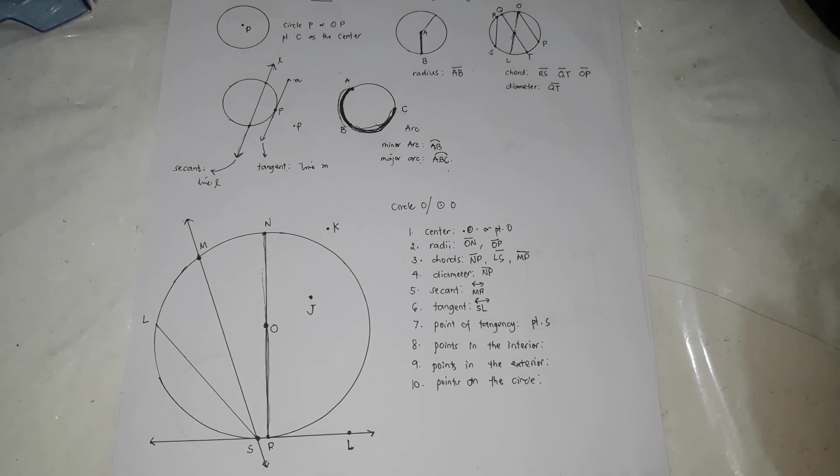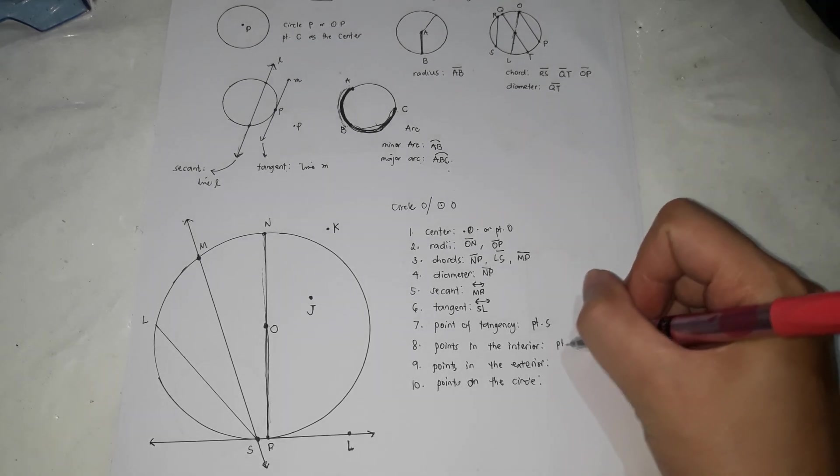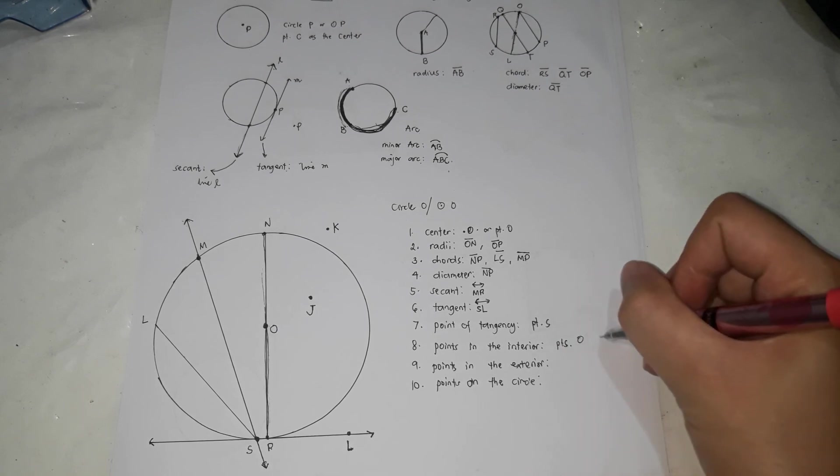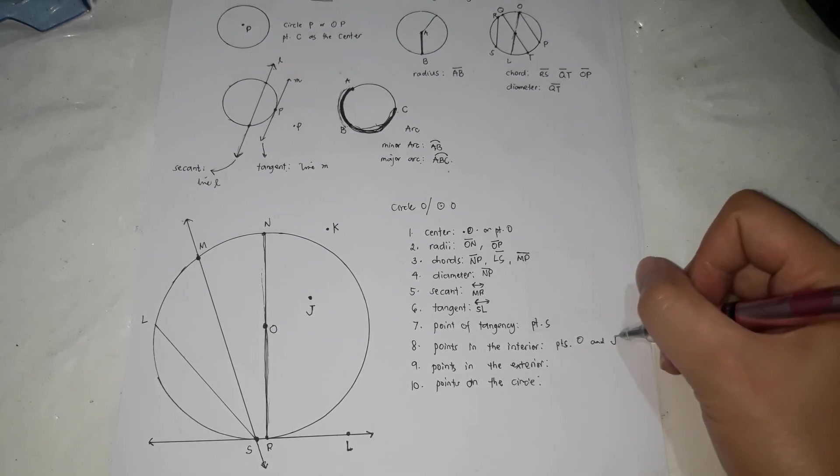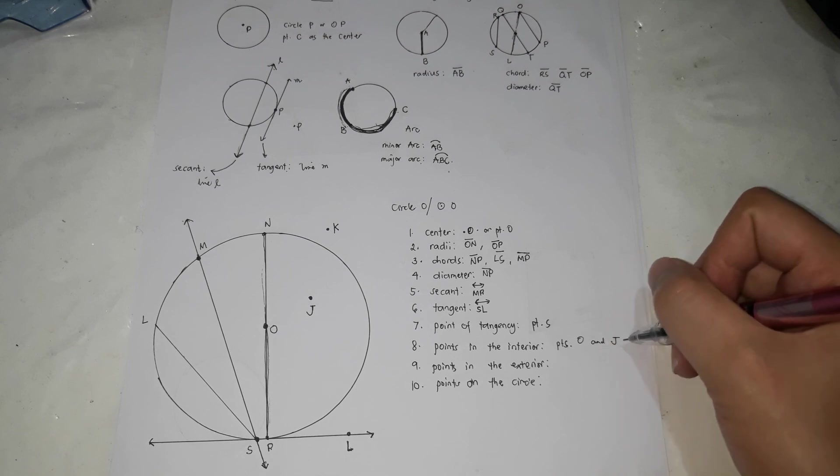Points on the interior - points inside the circle. So it's points O and J. So point O and point J.